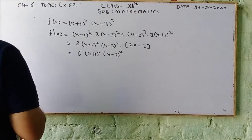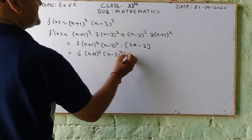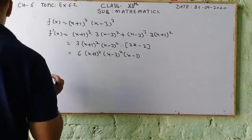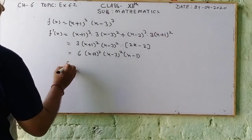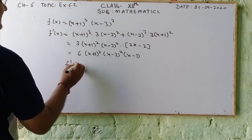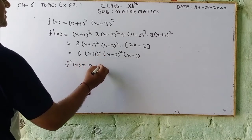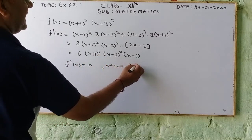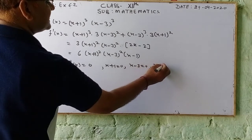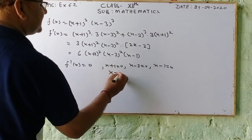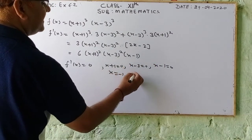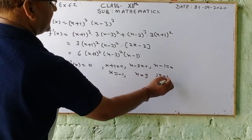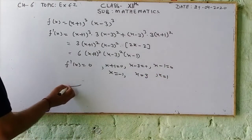We set f'(x) equal to 0. From 6(x+1)²(x-3)²(x-1) = 0, we get: x+1 = 0, x-3 = 0, and x-1 = 0, giving x = -1, x = 3, and x = 1.